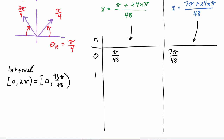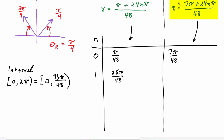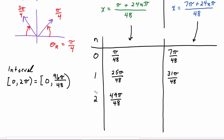Plugging n = 1 into the first formula: twenty-four pi plus pi is twenty-five pi over forty-eight — still within the interval. Plugging n = 1 into the second equation: twenty-four pi plus seven pi is thirty-one pi over forty-eight — still within the interval. For n = 2 in the first formula: forty-eight pi plus pi is forty-nine pi over forty-eight, still within the interval. Plugging n = 2 into the second formula: forty-eight plus seven is fifty-five pi over forty-eight — still within the interval.